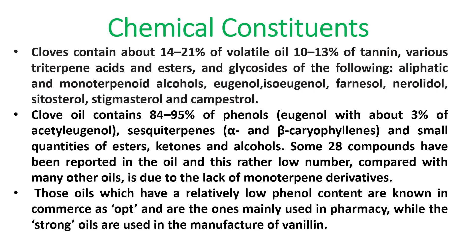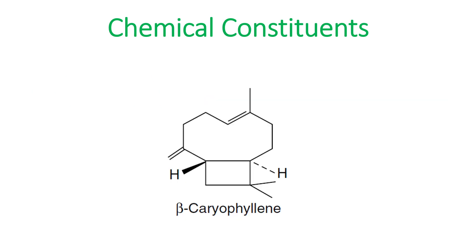Those oils which have relatively low phenol content are known in commerce and are the ones mainly used in pharmacy, while the strong oils are used in the manufacture of vanillin. This is the chemical structure of beta-caryophyllene — it is one of the most important compounds.